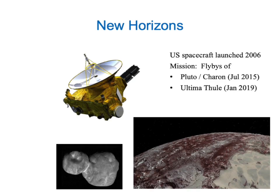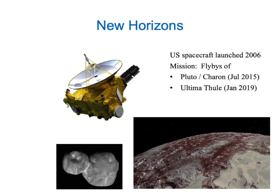Here's something a bit more recent: the New Horizons spacecraft, which was launched in 2006 and flew past Pluto and its moon Charon in July of 2015, and then later by a small, very distant body called Ultima Thule in January 2019. We can see the high-gain antenna, which needs to communicate over billions of kilometers, the radiothermal generators, and various instruments like the imaging systems and the solar wind experiment.